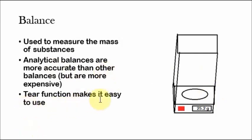The tare function makes it easy to use. So basically what that is, is let's say you have a watch glass, let me just draw this. So let's say you had this watch glass and then you had some substance on it. So what you do to get the mass of just the substance, is that you'd first put the watch glass in the analytical balance, and then you'd hit this button right here called the tare button.